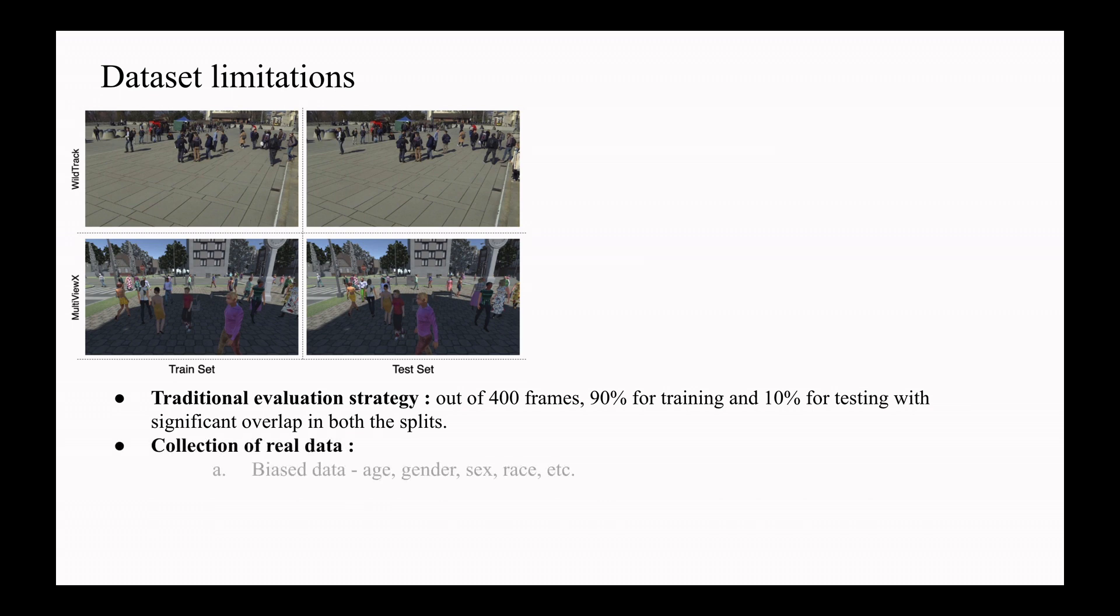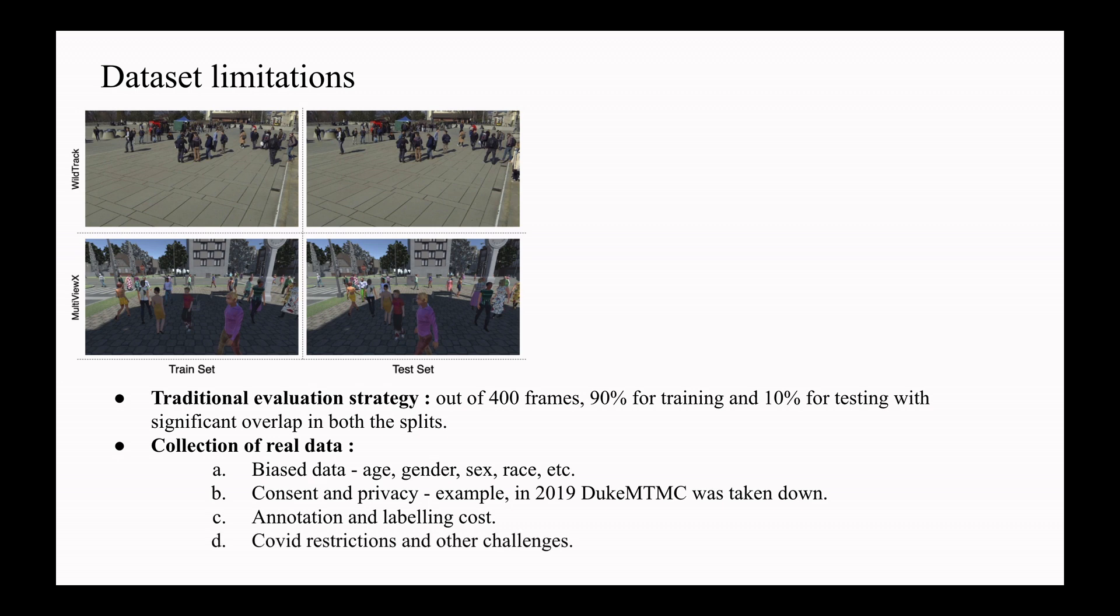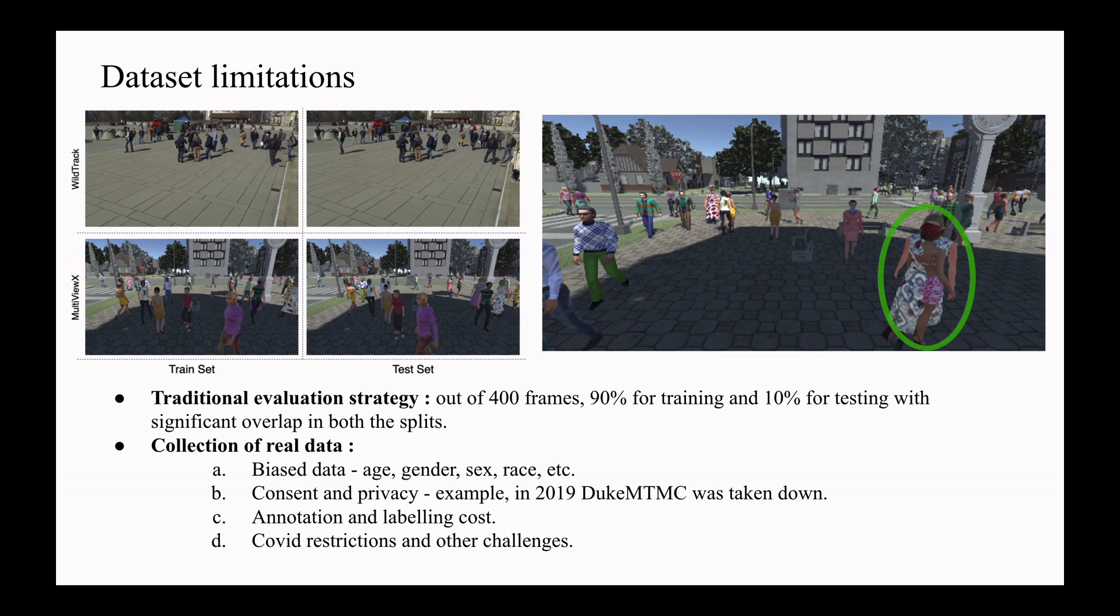Apart from this, there are practical challenges of collecting real data which include biasedness, consent and privacy, expensive annotation and labeling costs, and because of unnatural circumstances such as COVID restrictions, collection of real data becomes impossible. MultiviewX data also has frames where there are collisions of two human models.